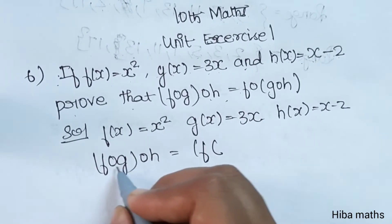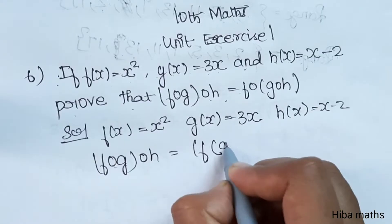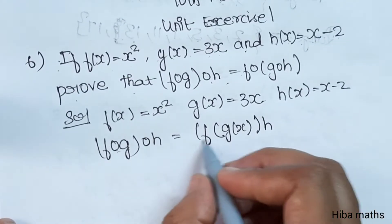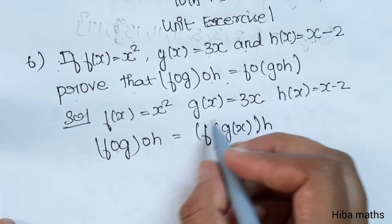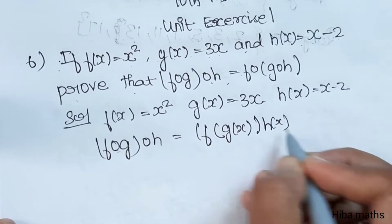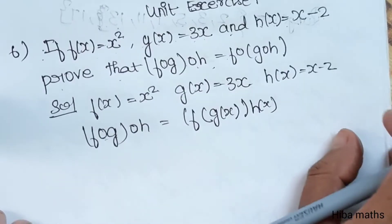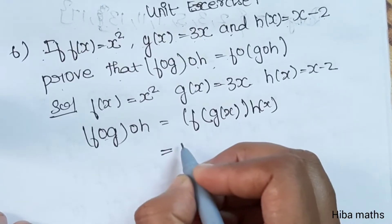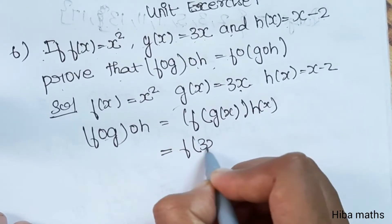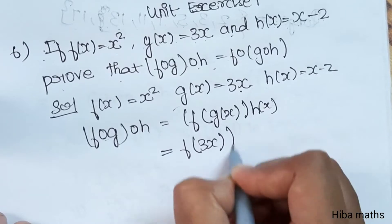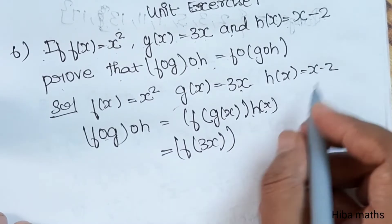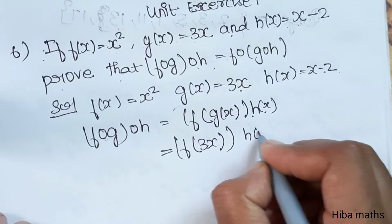F of g of h. So, f of x is equal to 3x and h of x is equal to x minus 2. We will replace the solution.